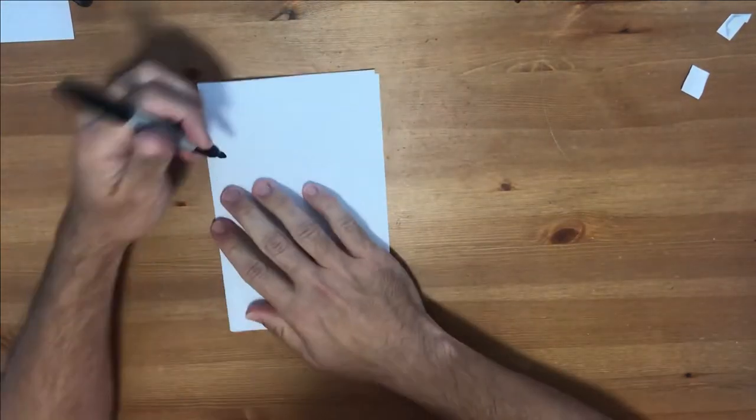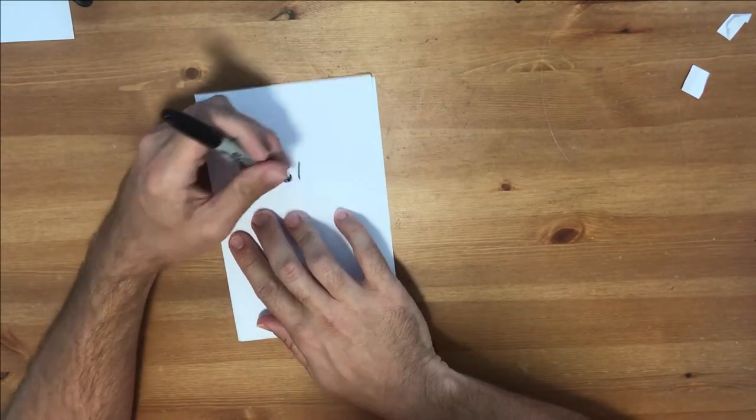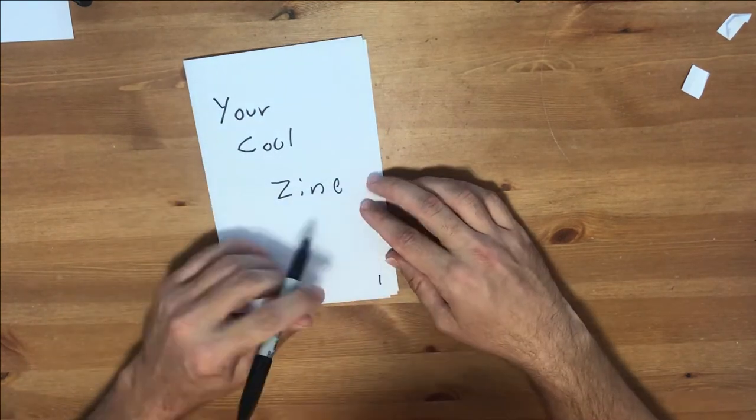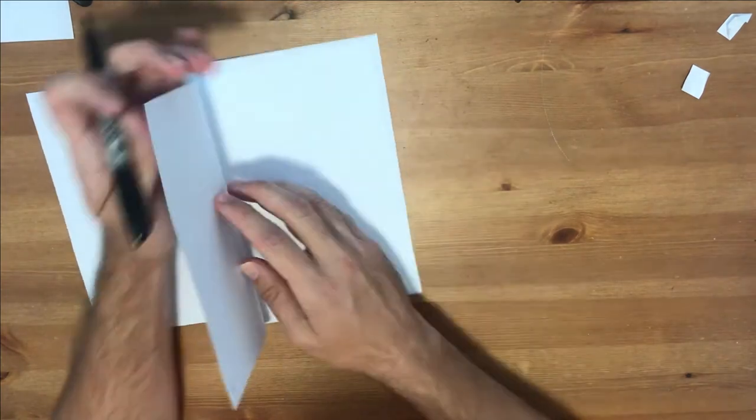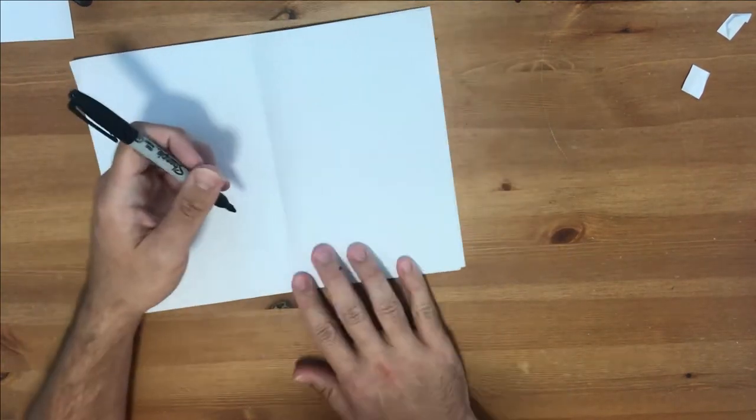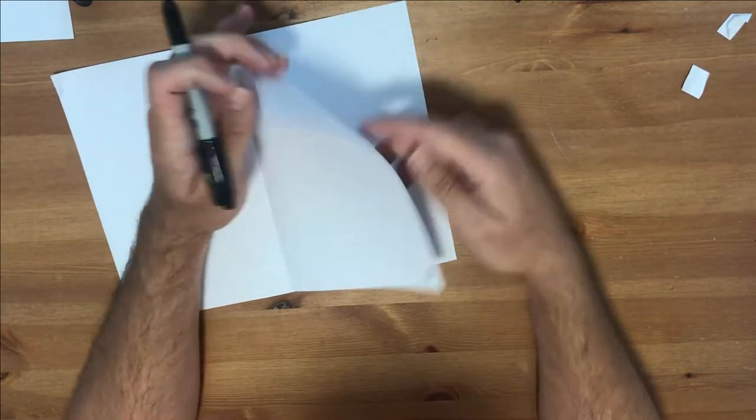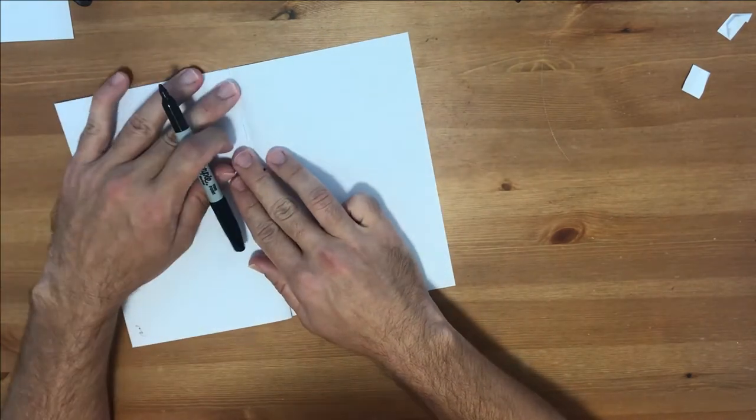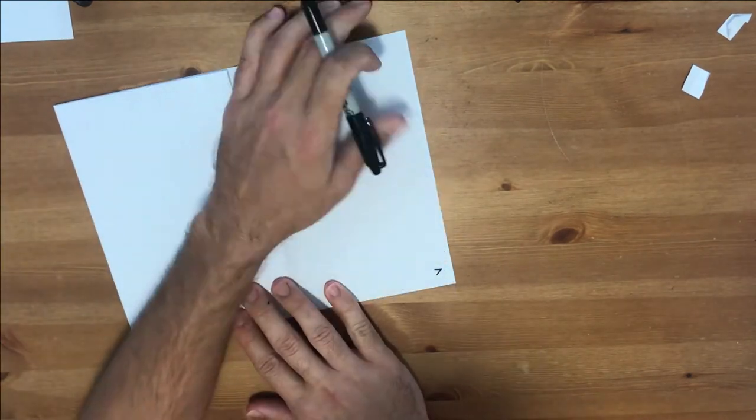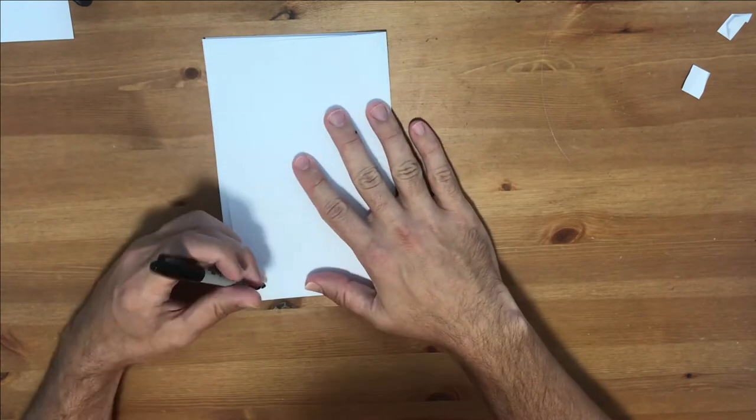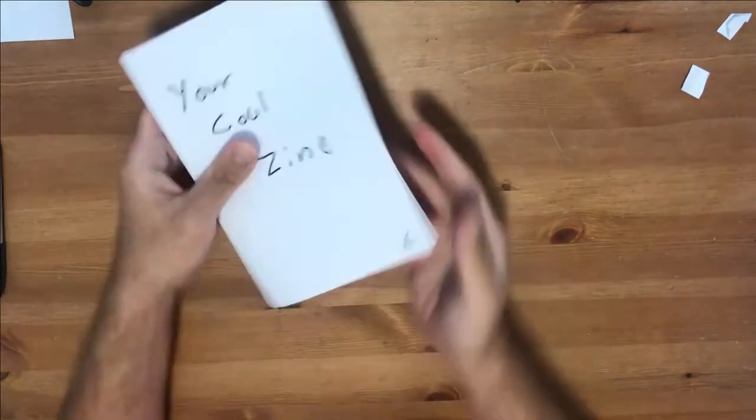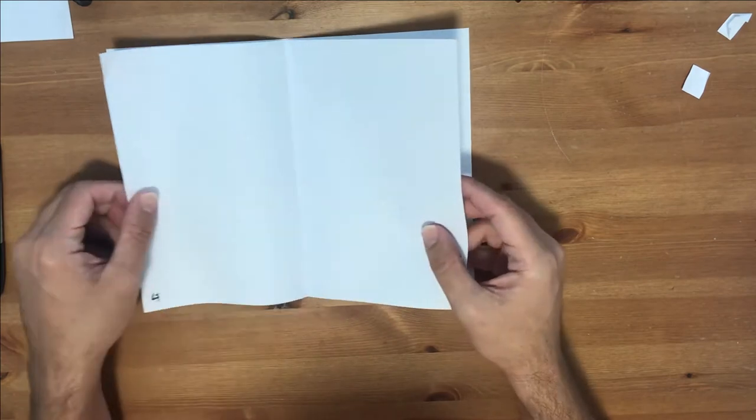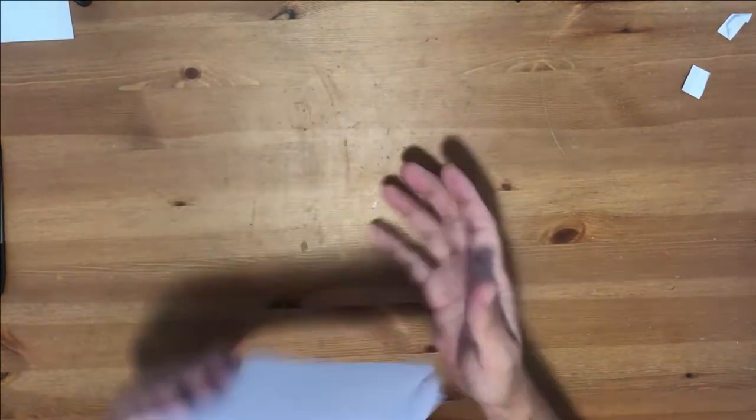If you go to a copy center, some copy machines may actually be able to fold and staple for you. If you're going to a copy center, ask your attendant there, ask the clerk there, if they can help you if their machines do that binding for you. That'll save you a lot of time having to fold up your zine.